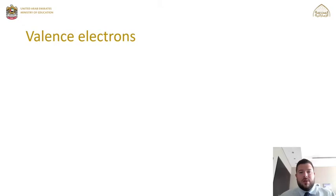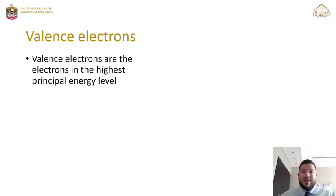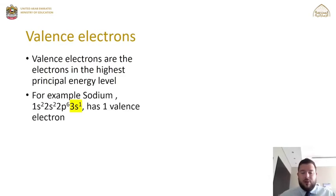Valence electrons are the electrons located in the highest principal energy level. For example, sodium has the electron configuration 1s² 2s² 2p⁶ 3s¹. I've highlighted 3s¹ because 3 is the highest principal energy level in sodium. Every electron located in principal energy level 3 is classed as a valence electron. In this case, we only have one valence electron.